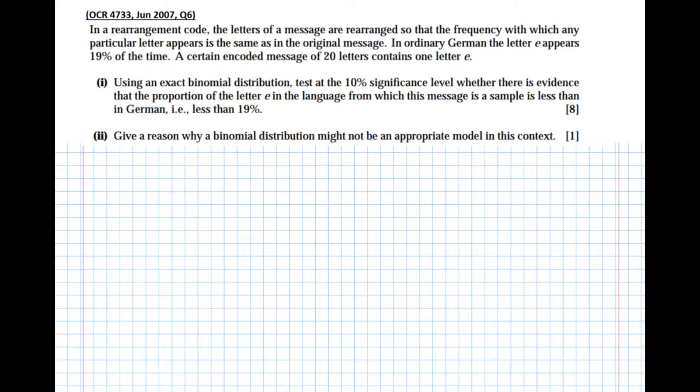Using exact binomial distribution test at the 10% significance level whether there's evidence that the proportion of the letter e in the language from which this message is a sample is less than in German, i.e. less than 19%. So as in any hypothesis test we need to define the parameter that we're testing for.